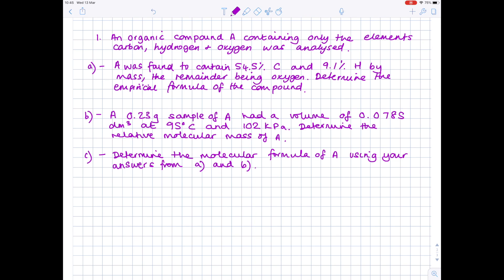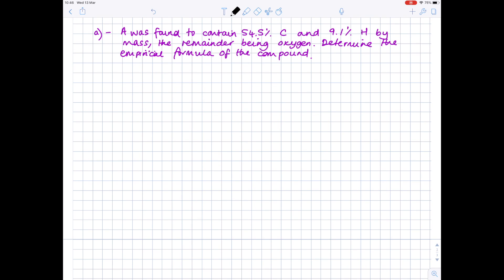So we're doing a straightforward empirical formulae calculation. So hopefully this will be quite similar to what you did at GCSE and IGCSE. We start by listing our compounds: carbon, hydrogen and oxygen. And we're going to use a table for this. In your table, you want to write mass, MR, number of moles.